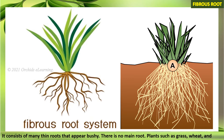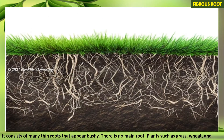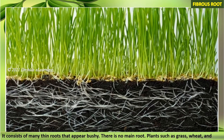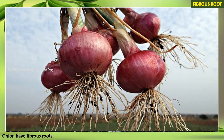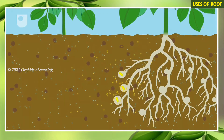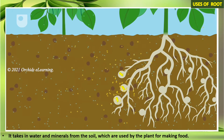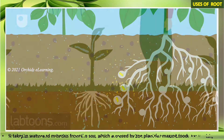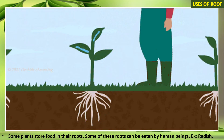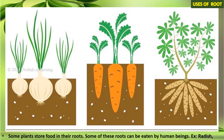Fibrous root consists of many thin roots that appear bushy; there is no main root. Plants such as grass, wheat, and onion have fibrous roots. Uses of roots: it helps the plant stay fixed to the soil and takes in water and minerals from the soil, which are used by the plant for making food.